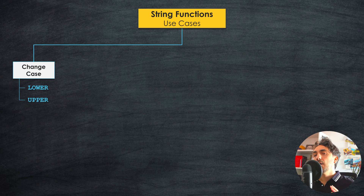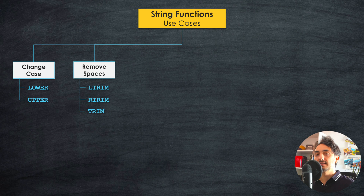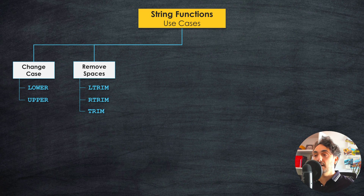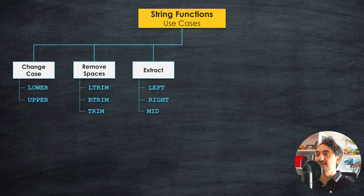For example, we can use them to clean up our data and bring our text to standard cases, such as changing the case to either lower or upper. The next use case is also about cleaning up our data in Tableau by removing any unwanted spaces. For that we have three functions: left trim, right trim, and trim. Moving on to the next use case, we have three functions to extract a specific substring from a text: left, right, and mid.